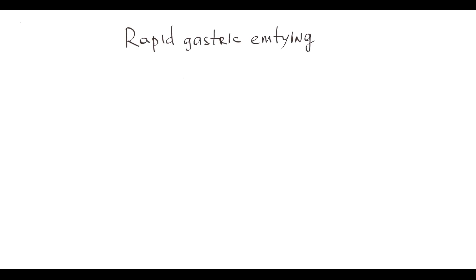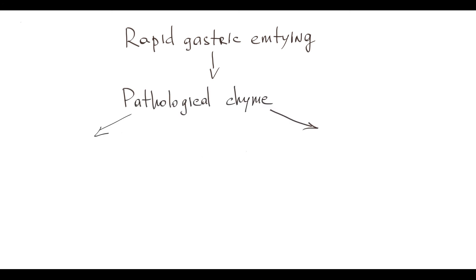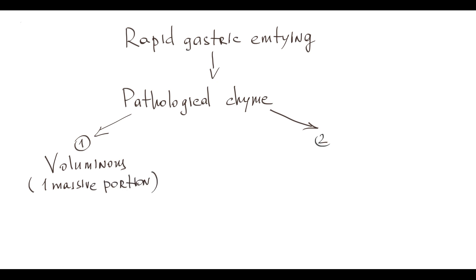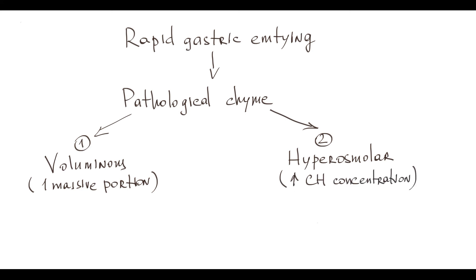The problem is that rapid gastric emptying leads to formation of pathological chyme with two major characteristics. First, pathological chyme is voluminous, because food enters the duodenum as one massive portion. Second, it is hyperosmolar, because food is incompletely digested and has a very high carbohydrate concentration. The transition of pathological hyperosmolar, voluminous chyme into the duodenum is the central event that leads to development of dumping symptoms.